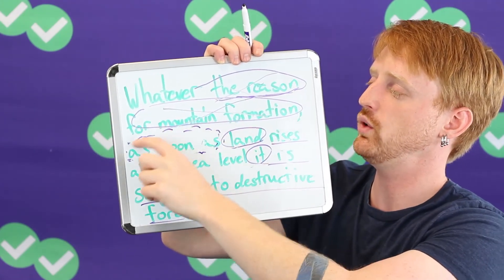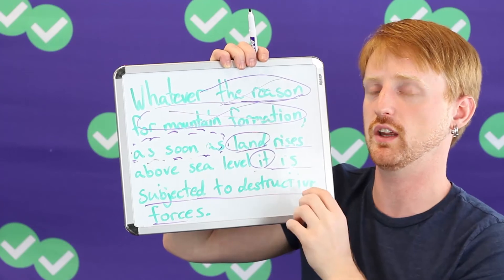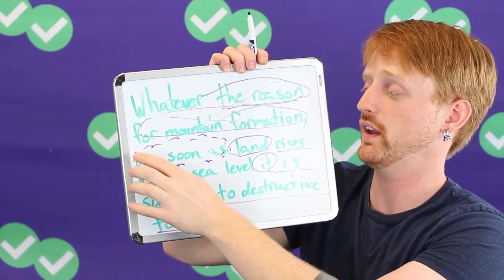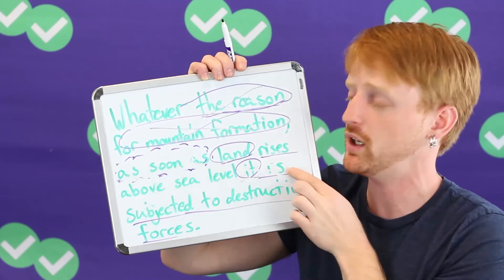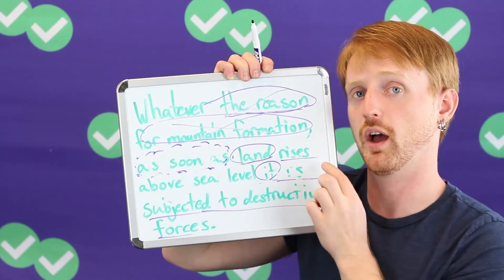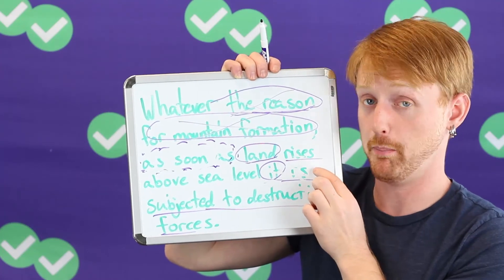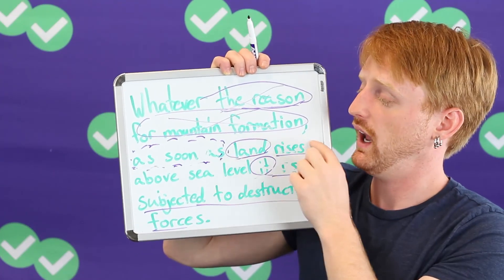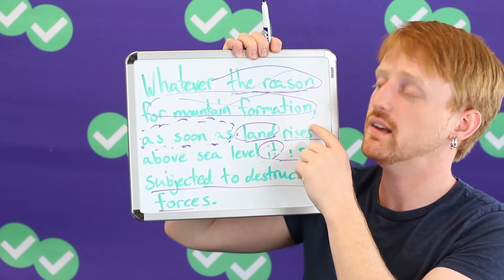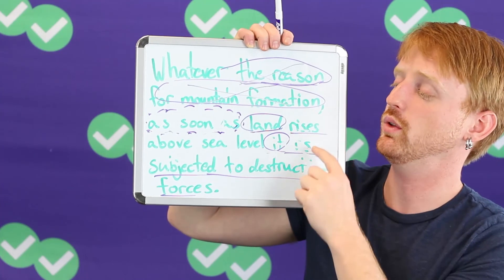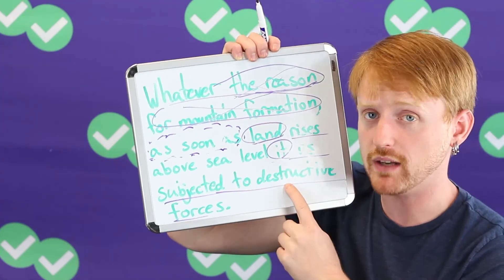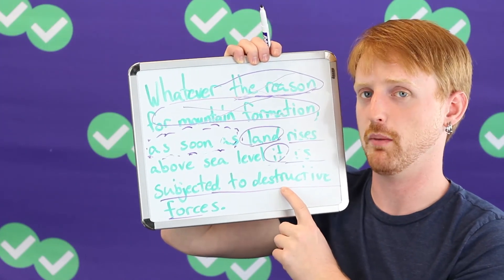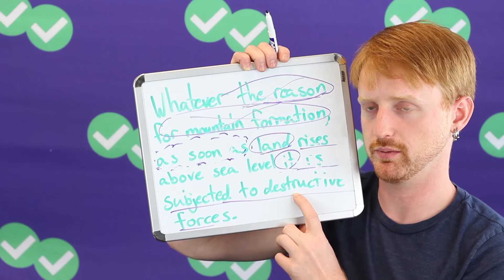Then see clues like 'as soon as,' which give you a clue that this is about time and that it is a dependent clause. That finally brings you to the independent clause, which has the most important information.